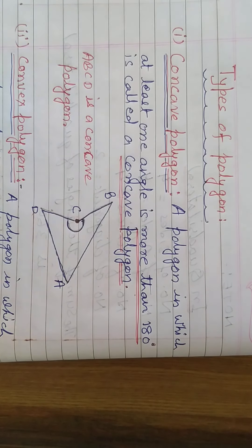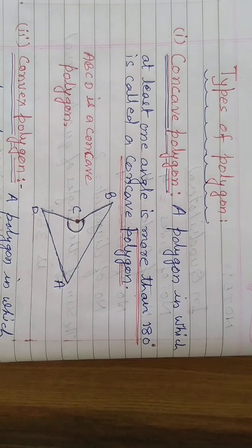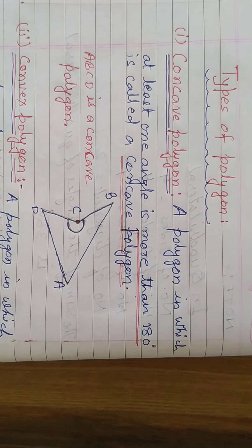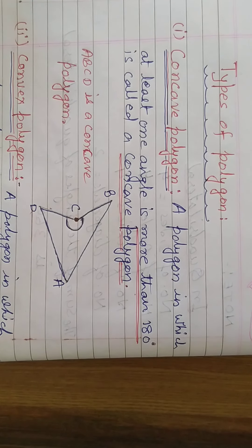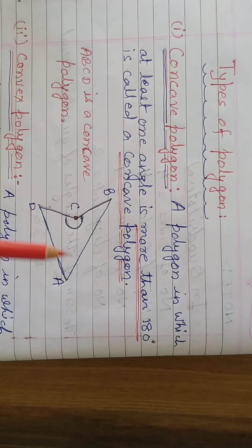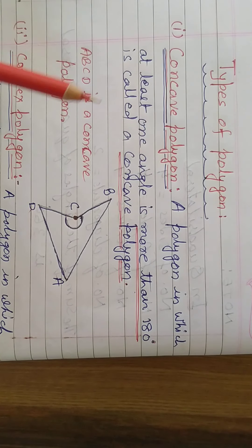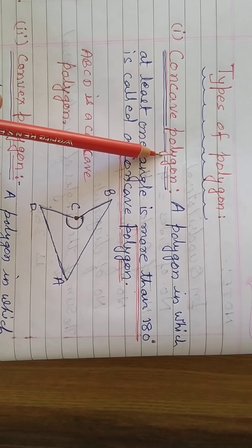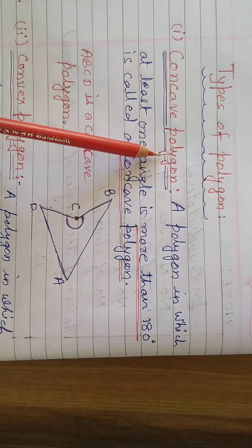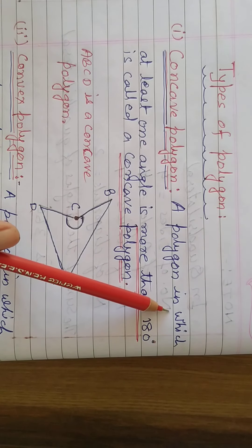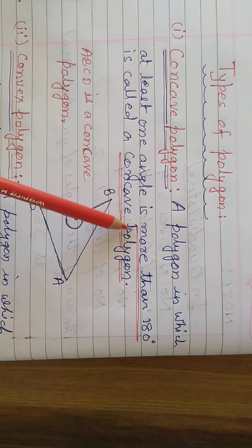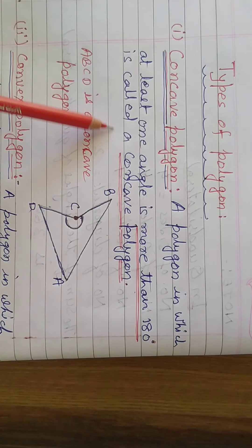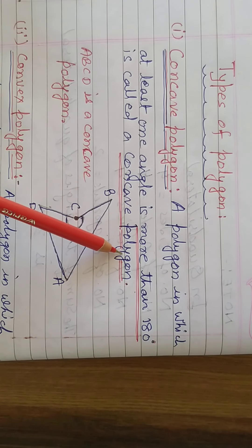Types of polygons. There are two types of polygons. First: concave polygons. A polygon in which at least one angle is more than 180 degrees is called a concave polygon.